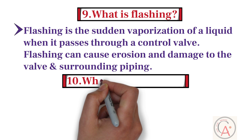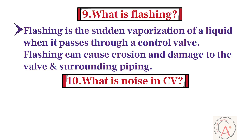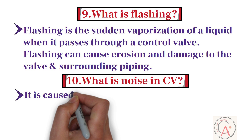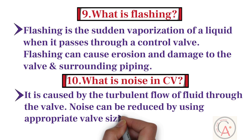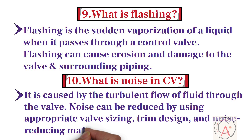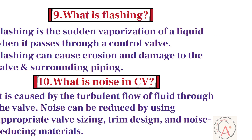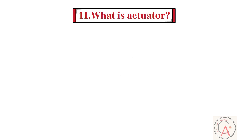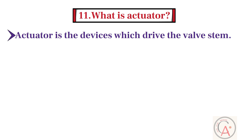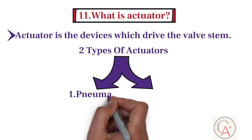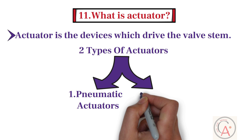Tenth question: what is noise in a control valve? Noise in control valves is caused by the turbulent flow of fluid through the valve. Noise can be reduced by using appropriate valve sizing, trim design, and noise-reducing materials. Eleventh question: what is the actuator in a control valve? An actuator is the device which drives the valve stem. There are two types of actuators: pneumatic actuator and electrical actuator.